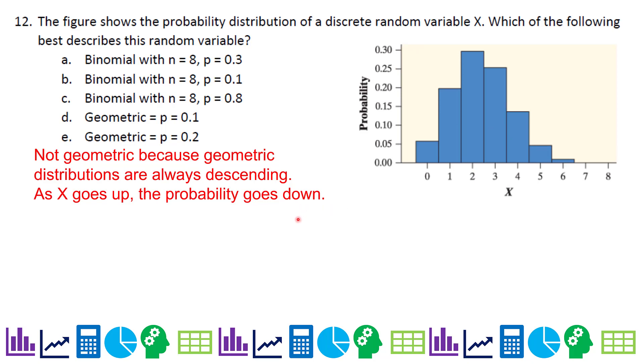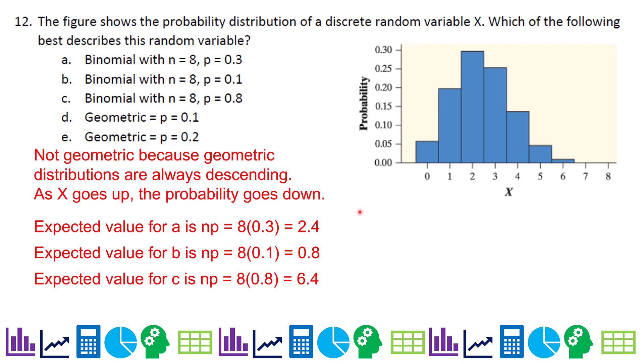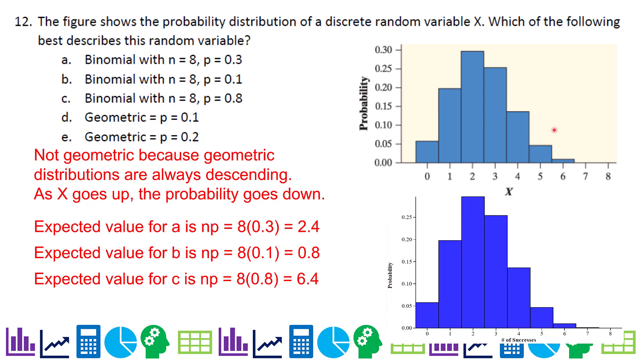It's not geometric. It's definitely a binomial. I'm going to say the expected value is somewhere in here. So I'm just going to calculate expected values for each scenario. Expected value for choice A is NP, 8 times 0.3 is 2.4. For B, it's 0.8. And for C, it's 6.4. You can clearly see that the expected value is not as low as 0.8 and it's not as high as 6.4. In fact, when I plugged these in Staplet, I plugged in N is 8 and P is 0.3 and you can see we have a match. So the choice is A.